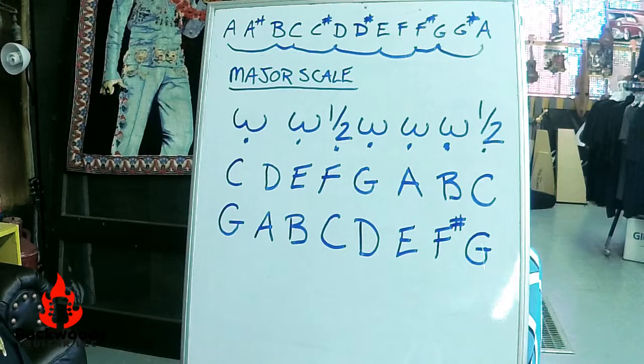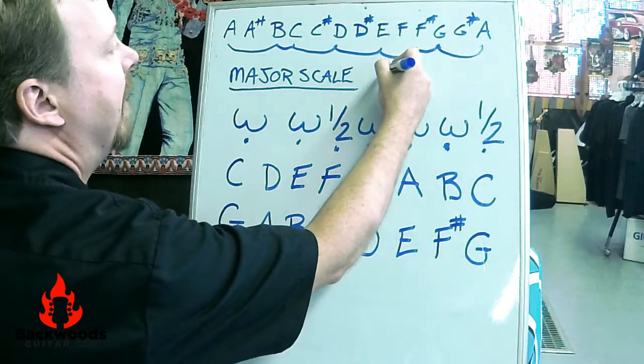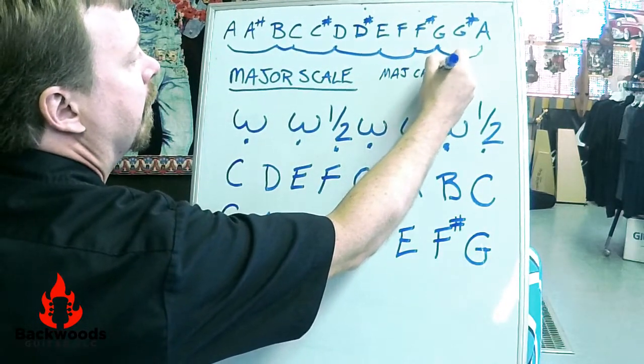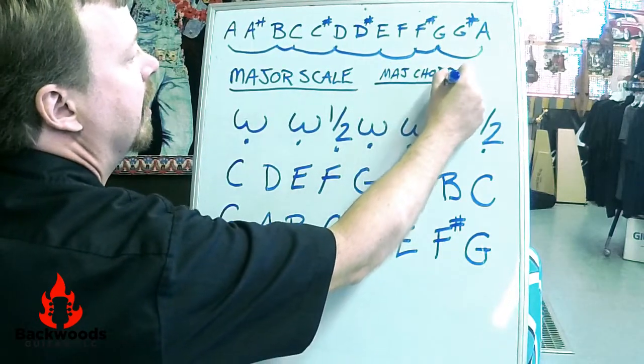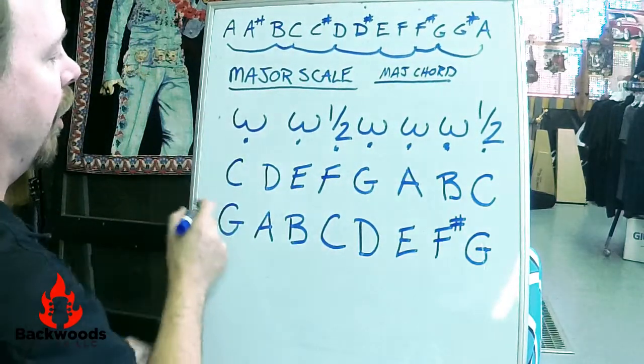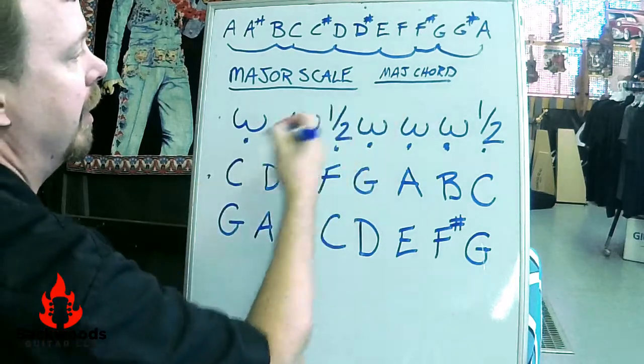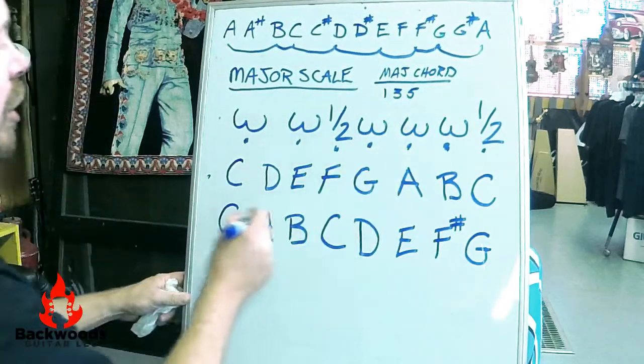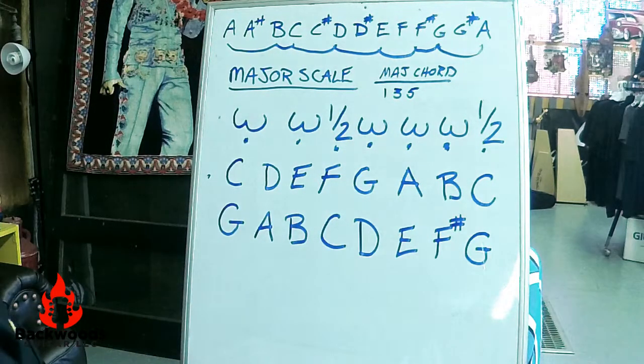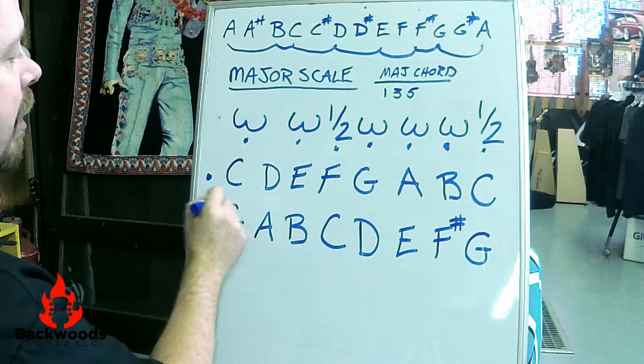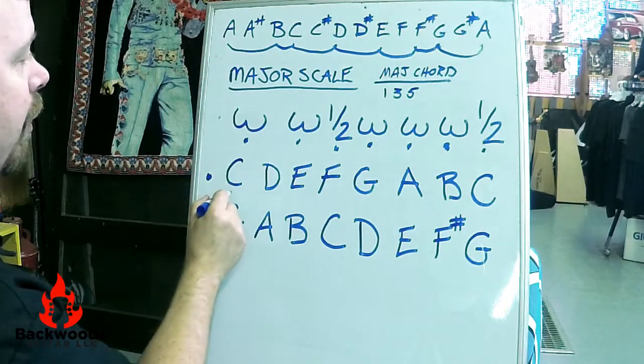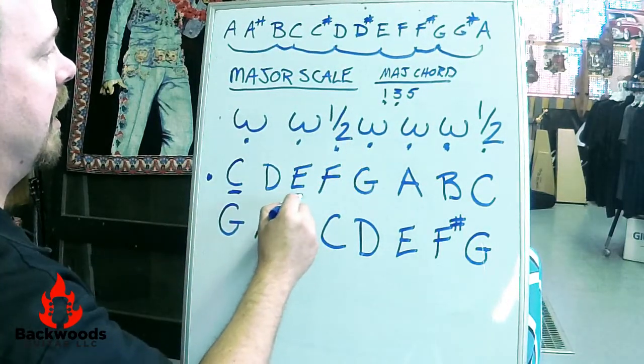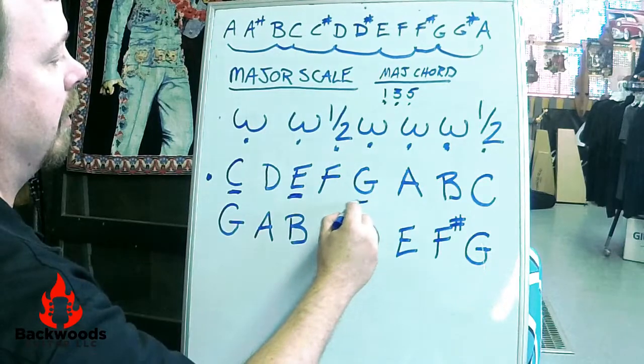So now let's learn another formula. How about a formula for a major chord? Its formula, instead of using steps, we're going to use tones out of these scales we just wrote. And to do a major chord, we're going to use the first, third, and fifth tones of these scales. So if I wanted to make a C major chord, the notes that are going to make up that chord are going to be the first one, which is C, the third tone, E, and fifth tone, G.